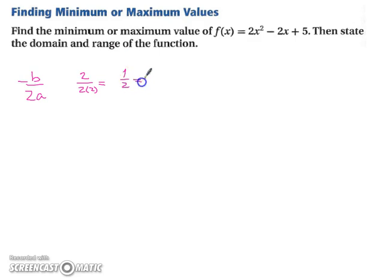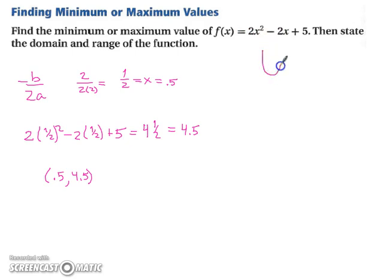So now we can plug that in because that's our x value. So we have 2 times 1 half squared minus 2 times 1 half plus 5. And when we equate that out, we end up with 4 and a half. You could also state it as 4.5. And you could also state this one as 0.5. So our vertex is at 0.5, 4.5. And since it opens up because it's positive, we know that we're going to have a minimum value.